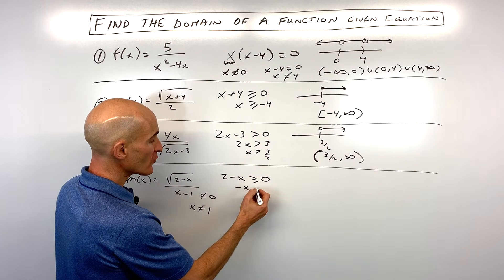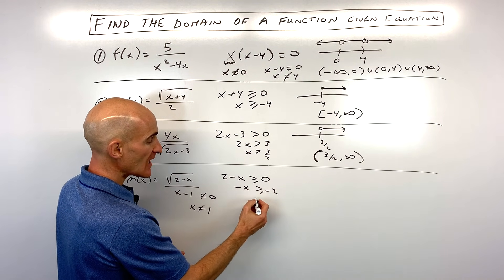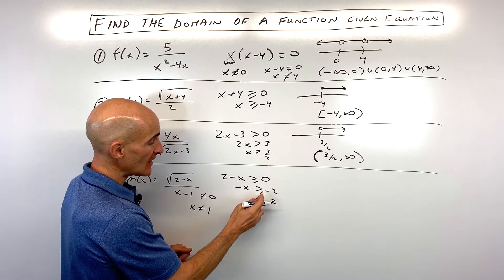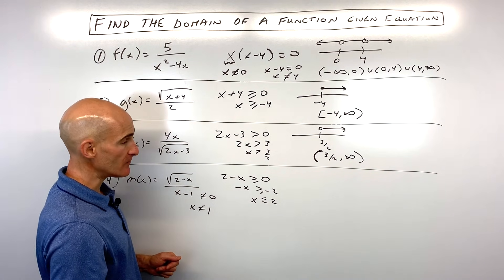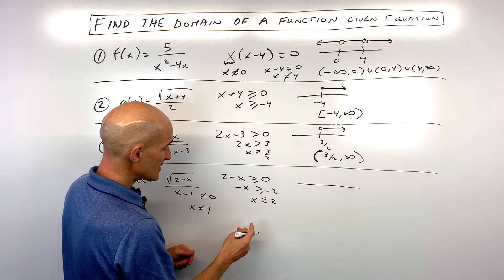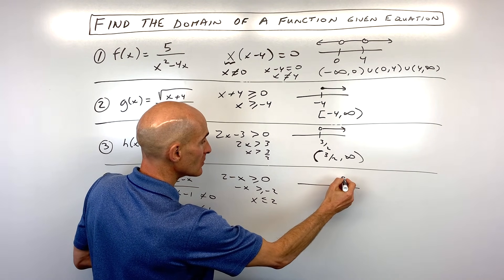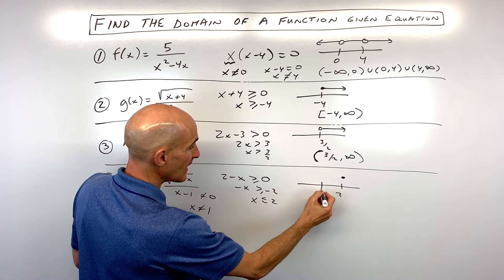So let's subtract two from both sides. Divide both sides by negative one. Remember, when we multiply or divide both sides by a negative, that inequality sign changes direction. Let's go to our number line here. We can see that x has to be less than or equal to two. Okay, but it can't equal one.